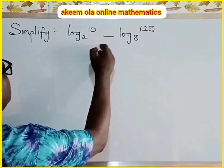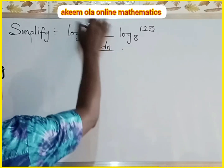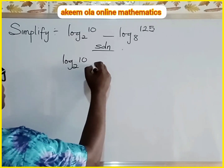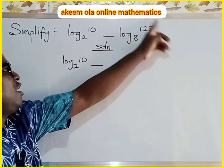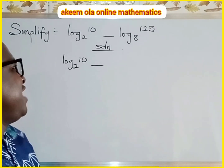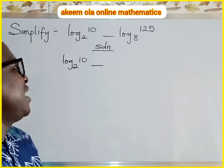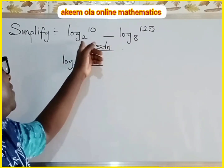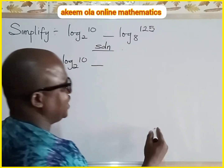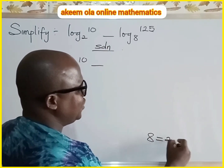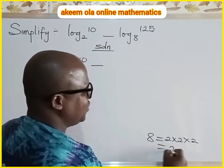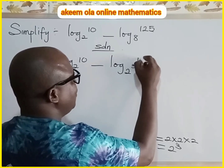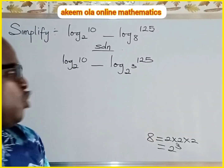We are given something of this nature. I have log base 8 of 10 — I don't really have a problem with this. But where the problem lies is on this particular side: you can see the base and the power. The base can further be simplified; I can still express this base — because 8 is two times two times two, which is two raised to the power three. That means we now have log base (2 raised to power 3) of 125.